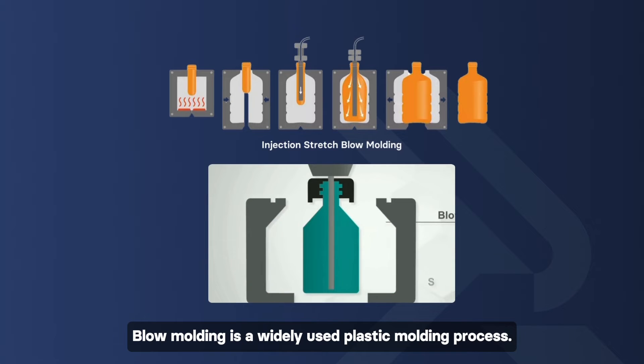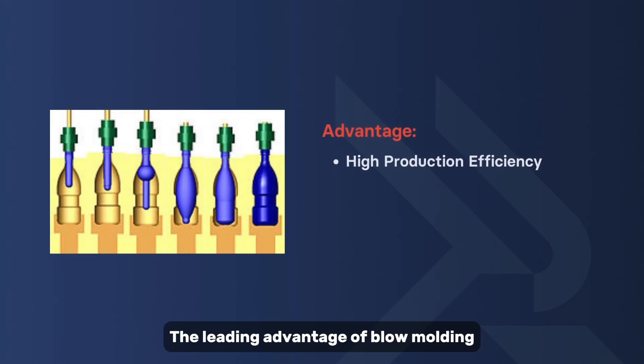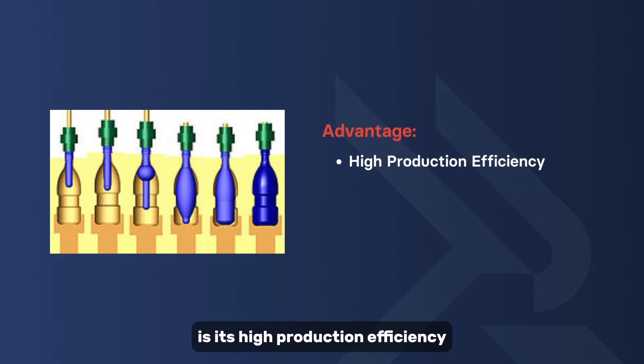Blow molding is a widely used plastic molding process. To gain a deeper understanding, let's explore the advantages and disadvantages of blow molding. The leading advantage of blow molding is its high production efficiency as it is automated, which enhances its suitability for mass production of plastic components. Additionally, blow molding is versatile.